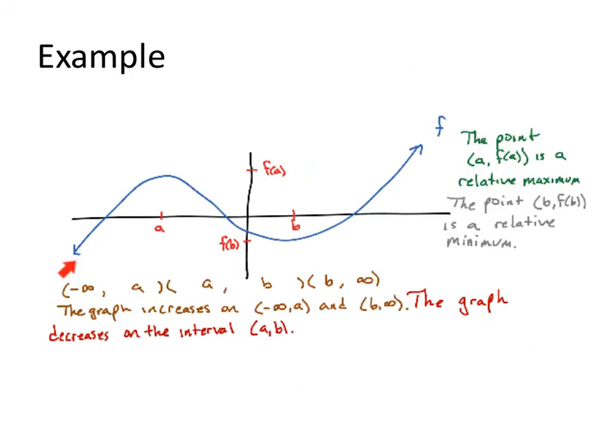Here's an example. Just some standard function f. Here's a, which is a relative maximum. And here's b, which gives us a relative minimum. From negative infinity to a, my graph is increasing. It's going up from left to right. From a to b, my graph is decreasing. It's going down from left to right. And from b to positive infinity, x values, my graph is going up. So the function shows us what's happening, but we report just the domain values, just the x values.